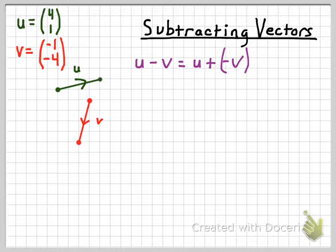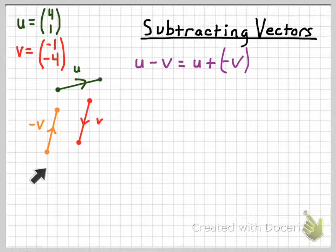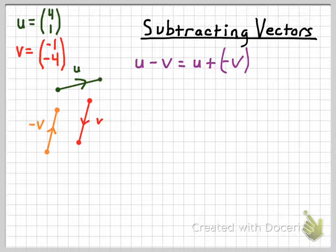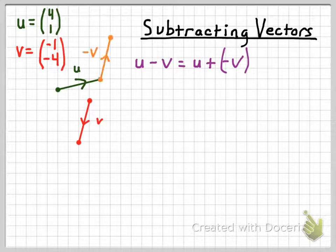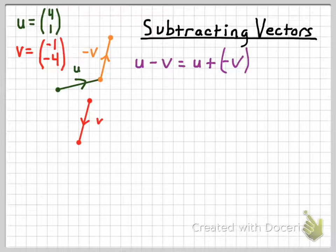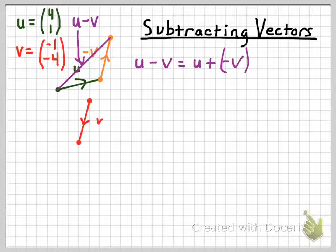For the geometric problem, we create a vector that's the opposite of vector v — recall that to make the opposite of a vector you just change its direction. Then we place the opposite of v head to tail with u, at the end of vector u. The resultant vector of that combination is our u minus v.